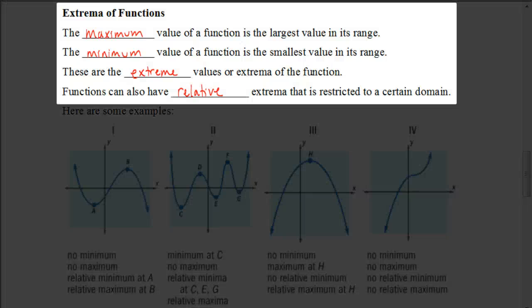In this video we're going to be looking at the extrema of functions. What are extrema? The extrema are referring to the maximum and minimum values. The maximum value of a function is the largest value in its range, and the minimum value of a function is the smallest value in its range. These are what we call the extreme values, or the extrema, of the function.